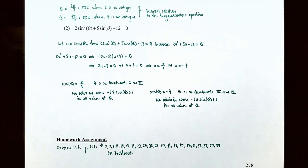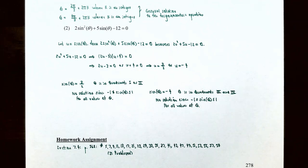This finishes our video on more trigonometric equations. We talked about how to solve trigonometric equations by factoring, and also how to solve trigonometric equations that are quadratic in form. If you have any questions about the examples in this video or about the homework for this section, please let me know. I'll see you in the next video when we talk about how to solve trigonometric equations using identities.